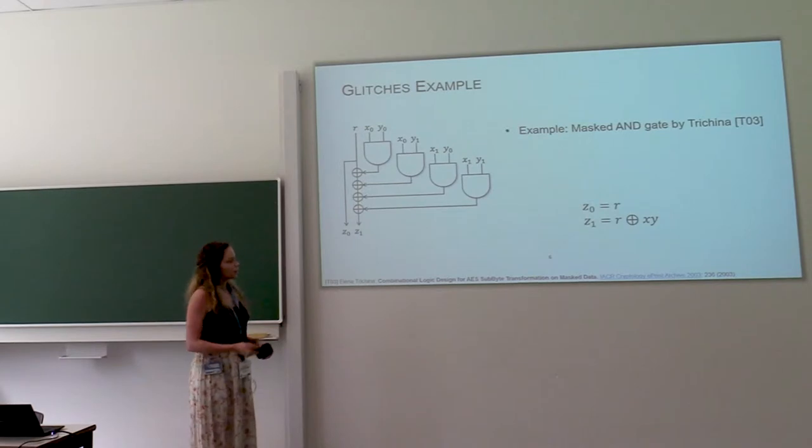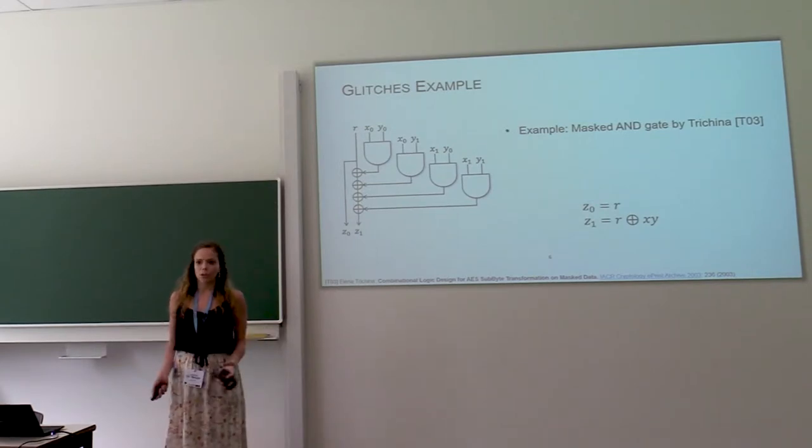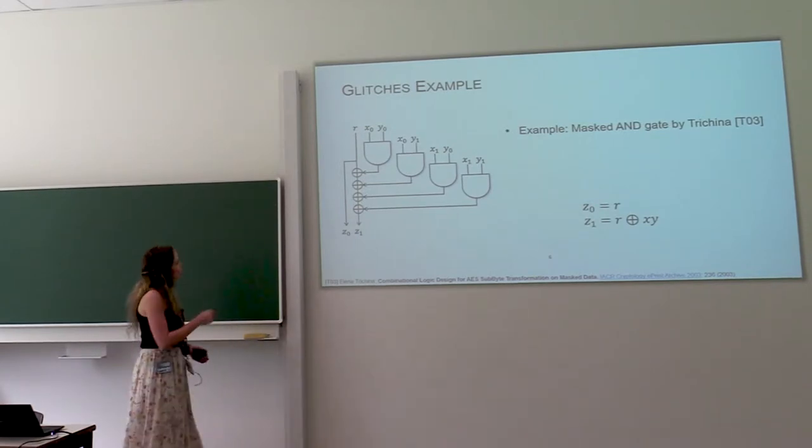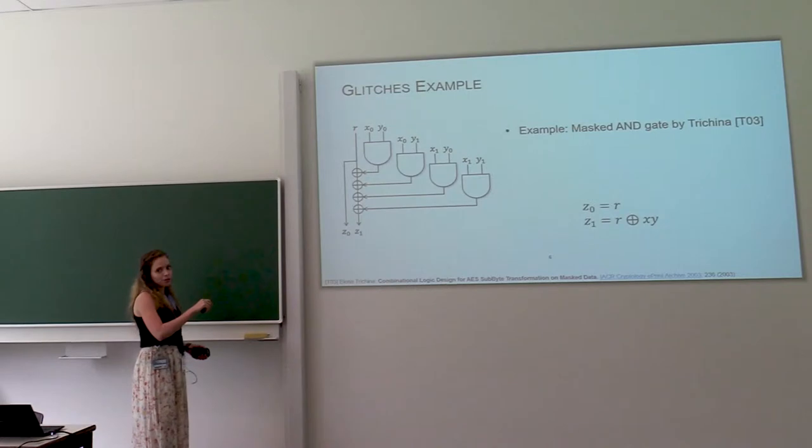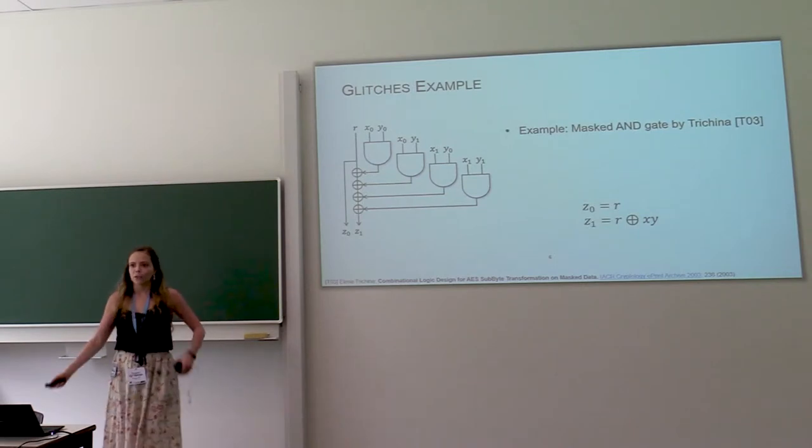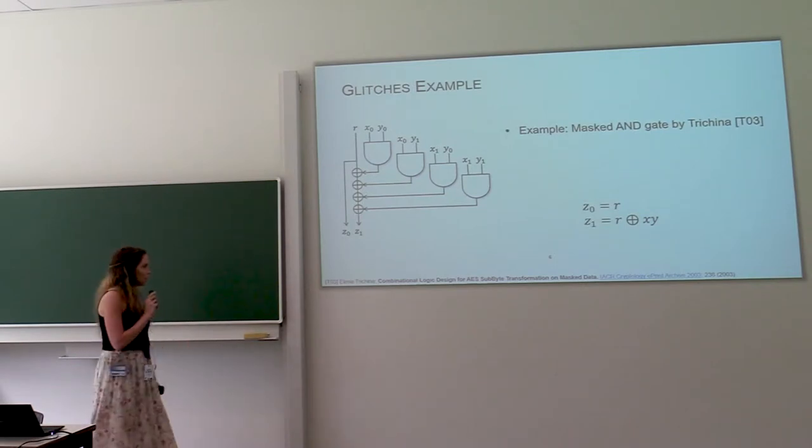And then the other output share is the sum of the random value with the multiplication x, y. And how do you arrive there? If you start with the random value and then one by one add these cross products, then you can be sure that every intermediate result here is independent of x and independent of y. But we didn't reach.